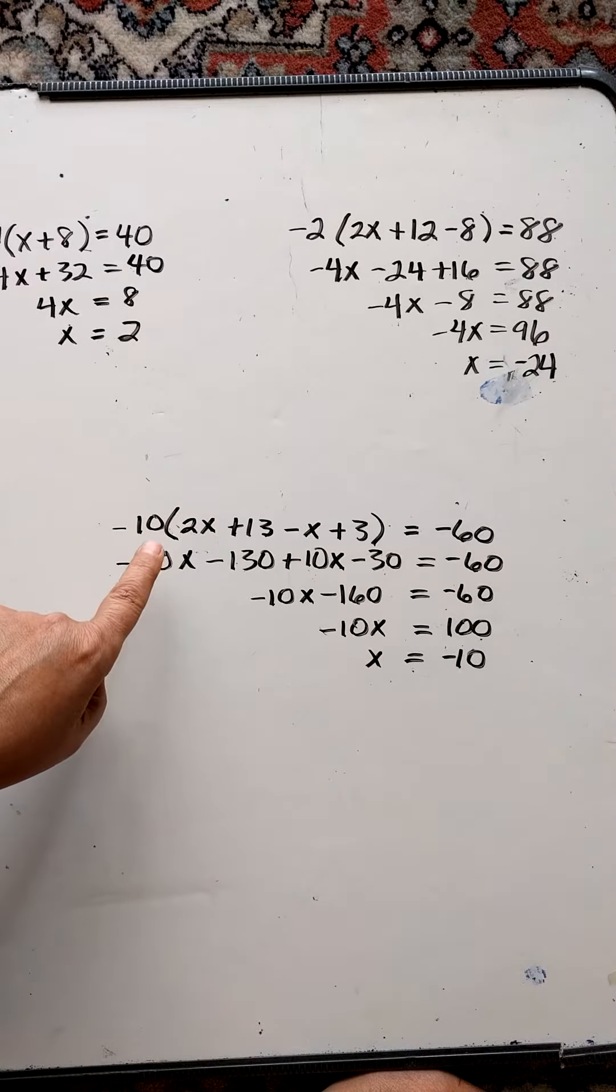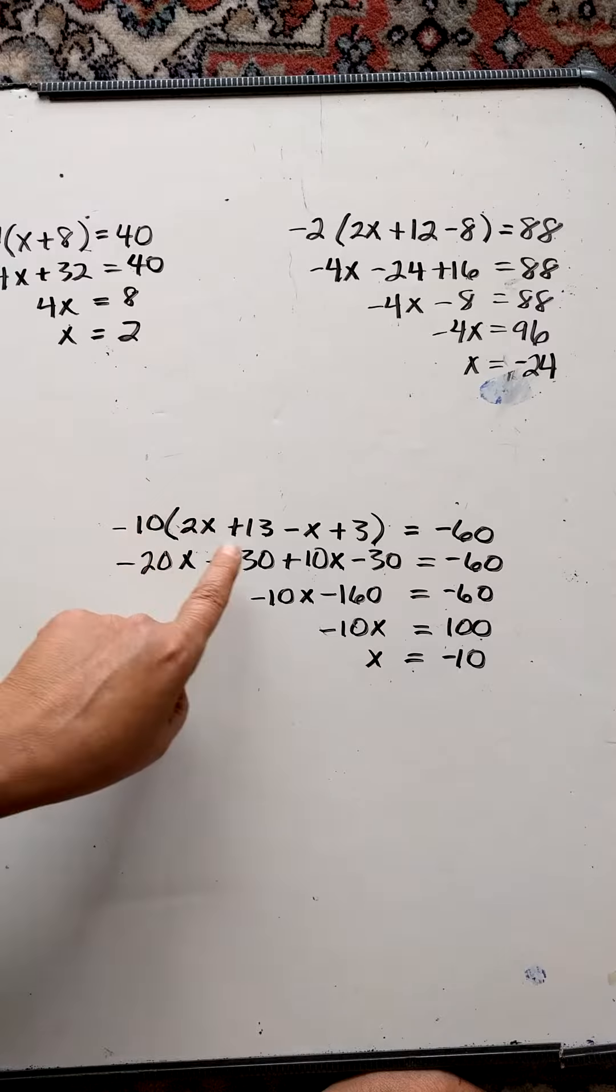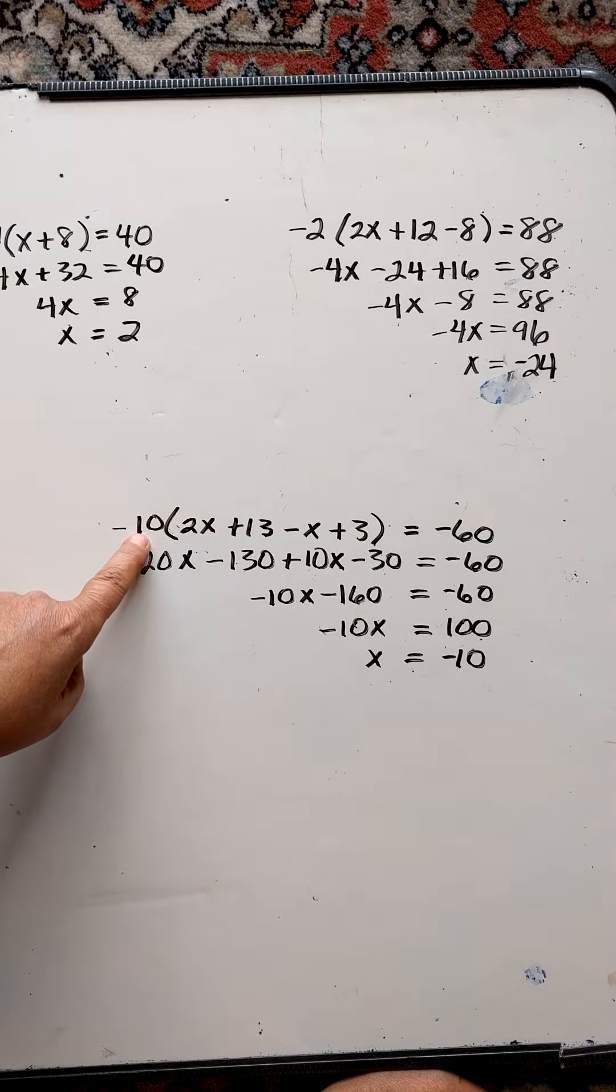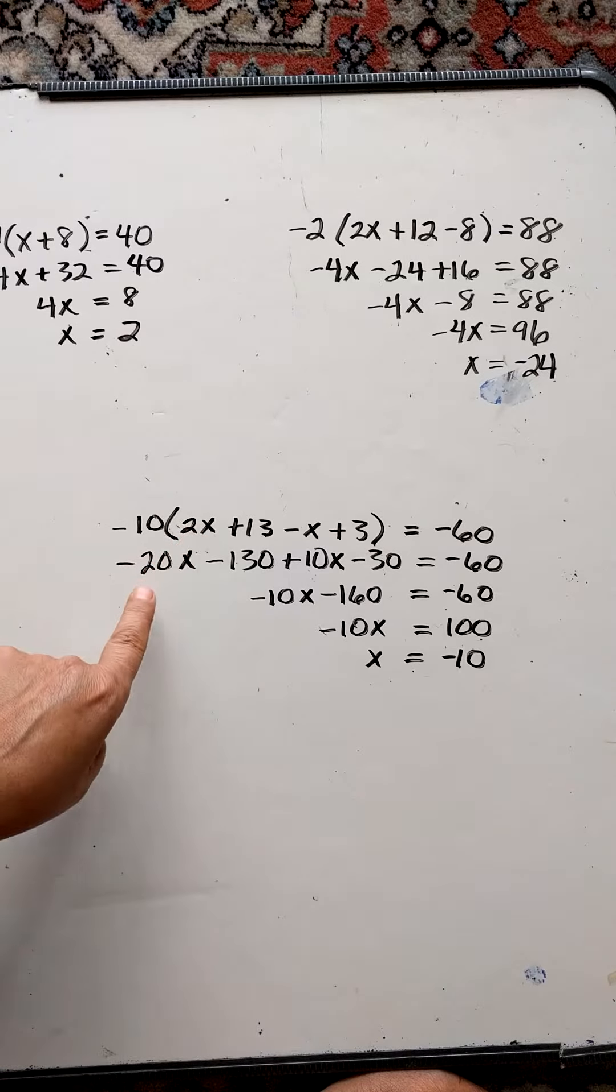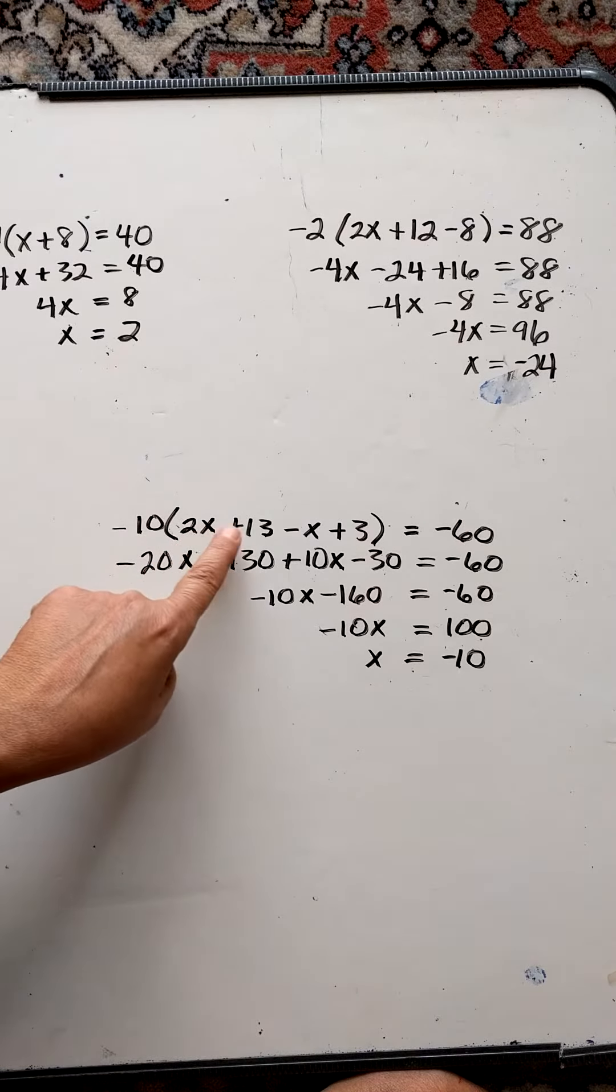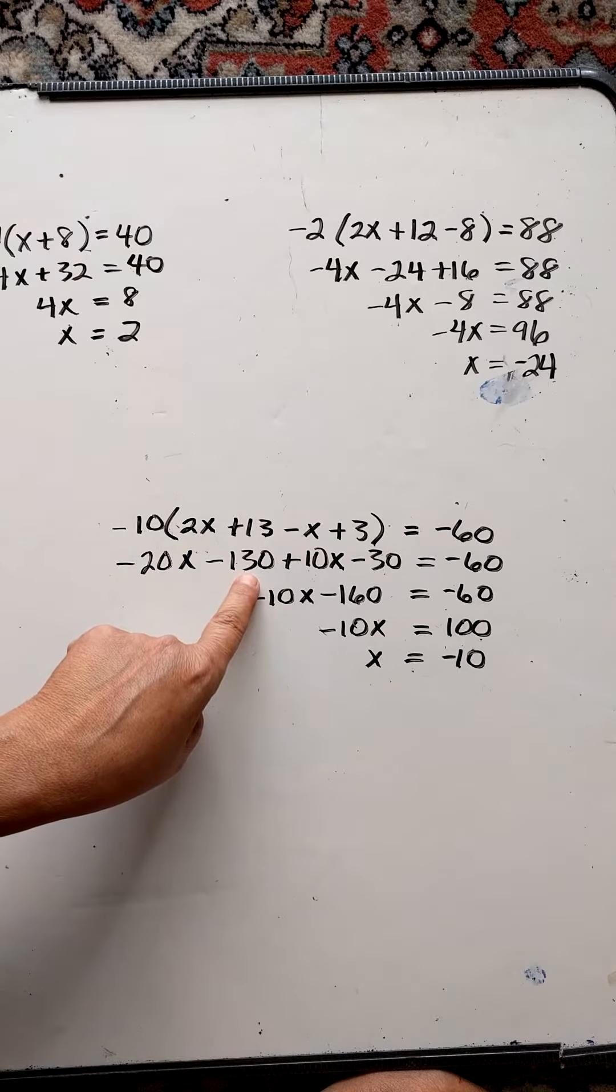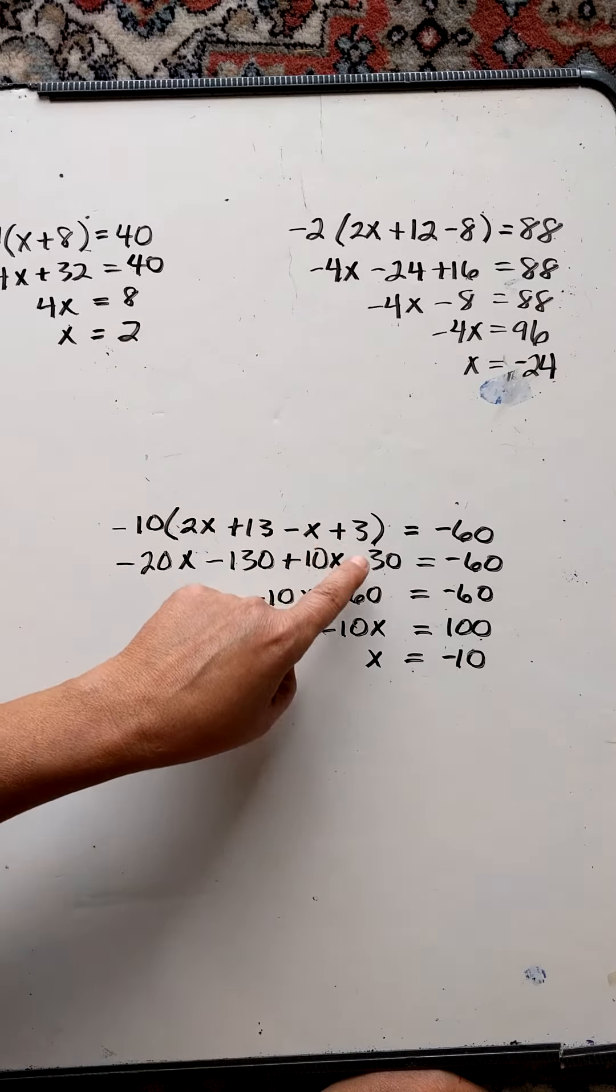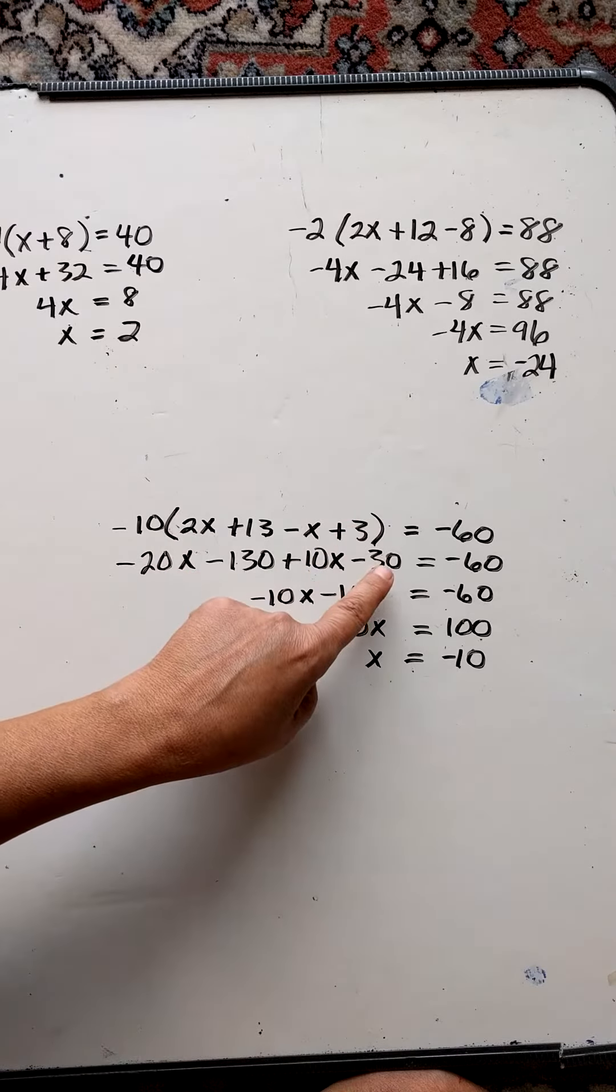And finally here, I'm going to negative 10 distribute to all these terms. Negative 10 times 2x is going to be negative 20x. I flip the sign, 10 times 13 is 130. Flip the sign, 10 times x is 10x. Flip the sign, 10 times 3 is 30.